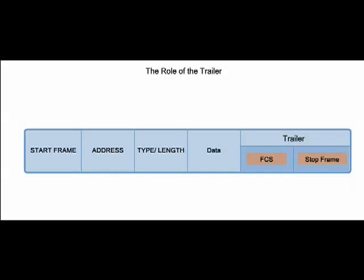The trailer is used to determine if the frame arrived with any errors. Error detection is accomplished by having the source host calculate a logical or mathematical sequence based on the content of the frame and placing that sequence in the frame check sequence field. The destination host will calculate its own check sequence and compare it to the values stored in this field. If these values do not match, then there was an error and the frame is discarded. The stop frame is optional and is used when the length field is not used.